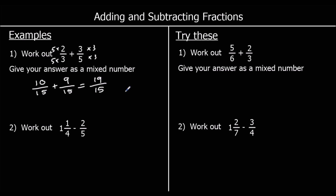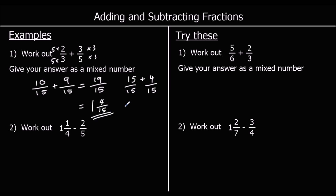We can see that this goes over one whole — fifteen-fifteenths is a whole. If I've got fifteen-fifteenths, that's one whole one. How many more fifteenths do I have? Fifteen plus four makes nineteen, so we can say it's fifteen-fifteenths and four-fifteenths, which is one whole one and four-fifteenths. So the answer is one and four-fifteenths.